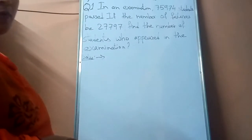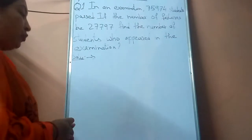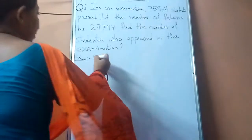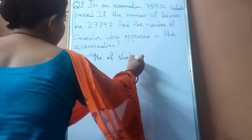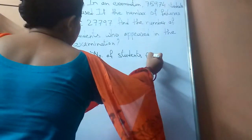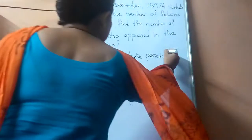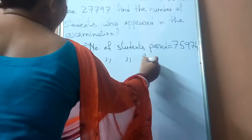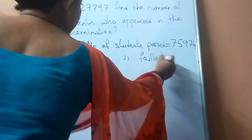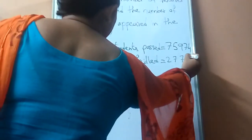Since it is a word problem, you have to write the statement. So first you write: number of students passed is equals to 75,974. Next you will write: number of students failed, it is 27,797.